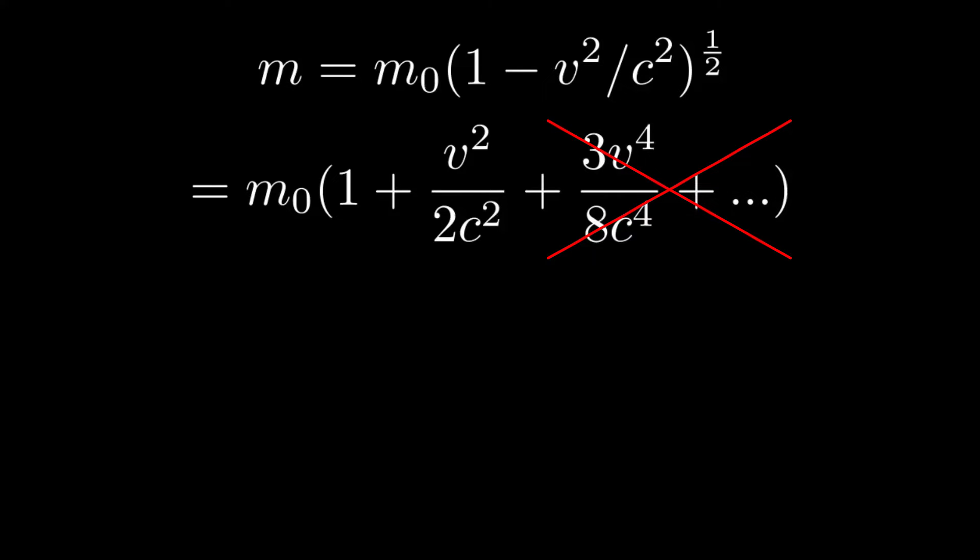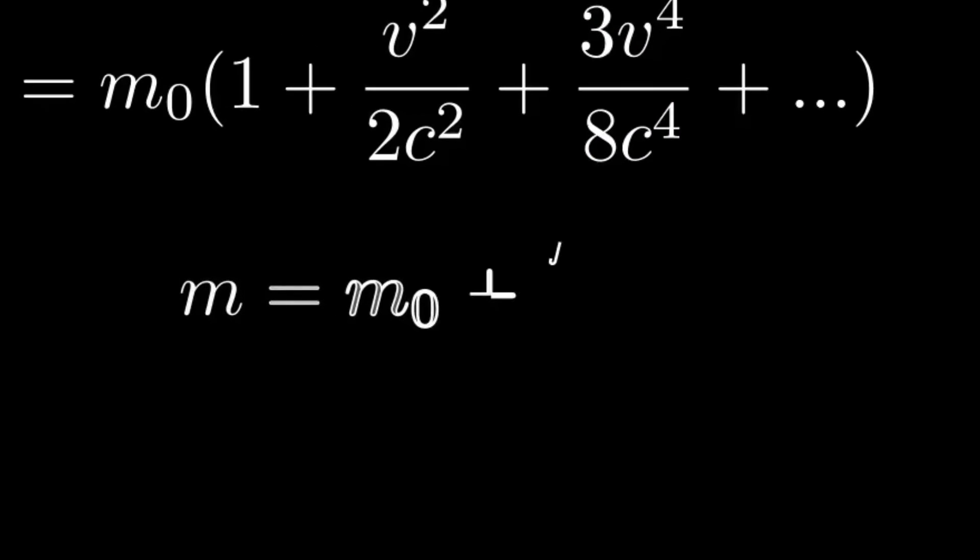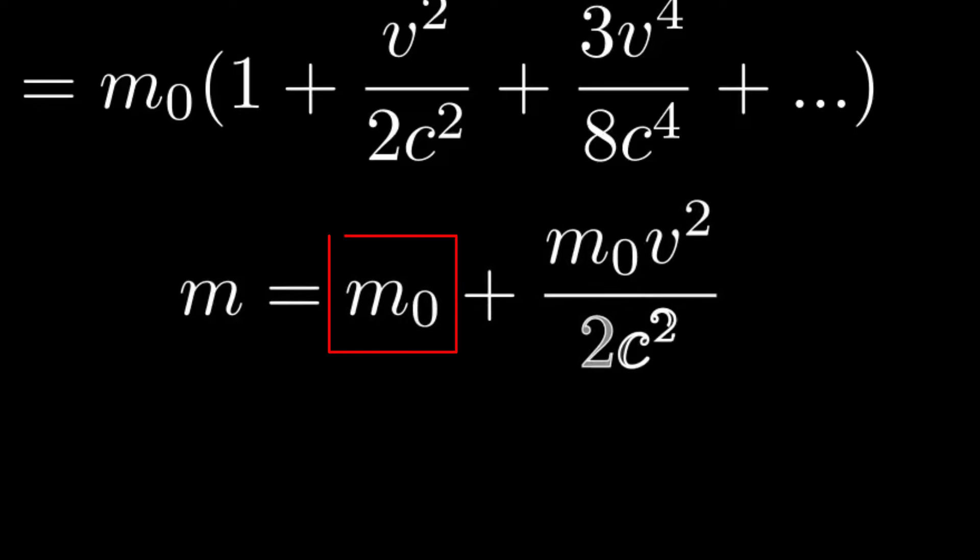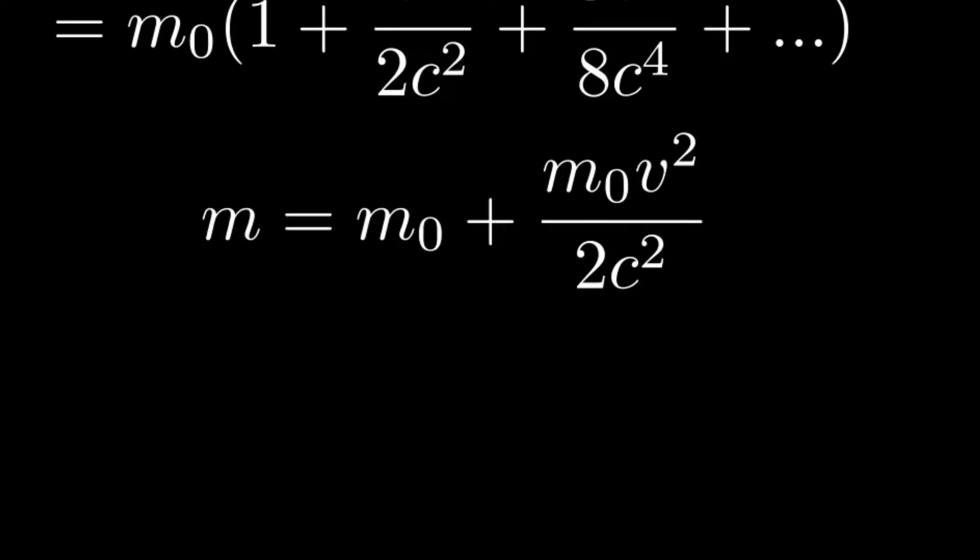Back to our expansion we get that our inertial mass is equal to the rest mass m naught plus a term which is essentially the kinetic energy m naught v squared divided by two divided by the speed of light squared.